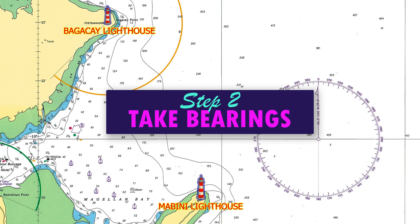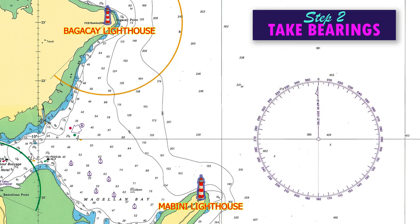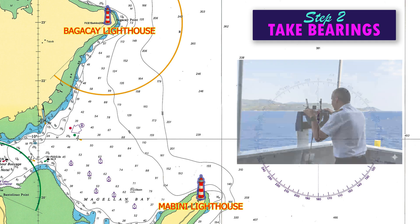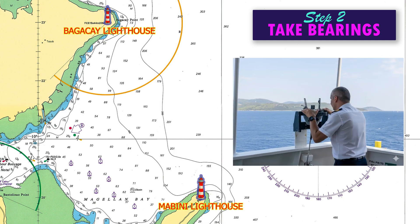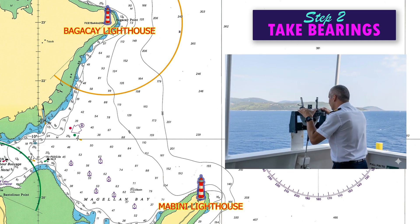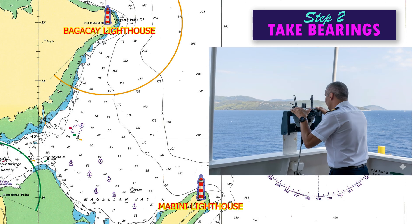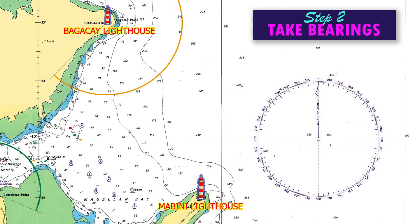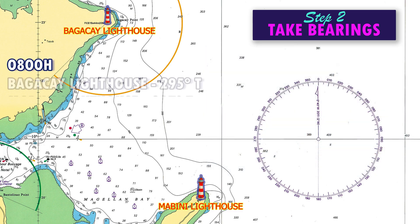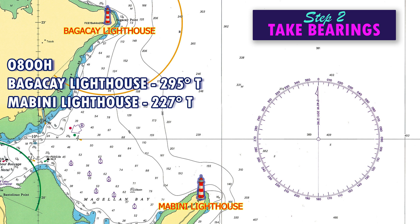Step 2: Take bearings. Next, use your compass and azimuth circle to take the bearings of the chosen objects. Make sure to record the exact time of each bearing. For example, at 0800 hours, the Bagakei Lighthouse bears 295 degrees true, while the Mabini Lighthouse bears 227 degrees true.